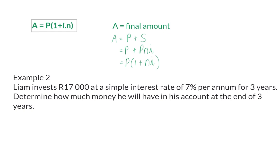In example 2, we still get the same information as in example 1, but the question is now different. Liam still invests 17,000 Rand at a simple interest rate of 7%, and the question is now, how much money will he have in this account at the end of 3 years?